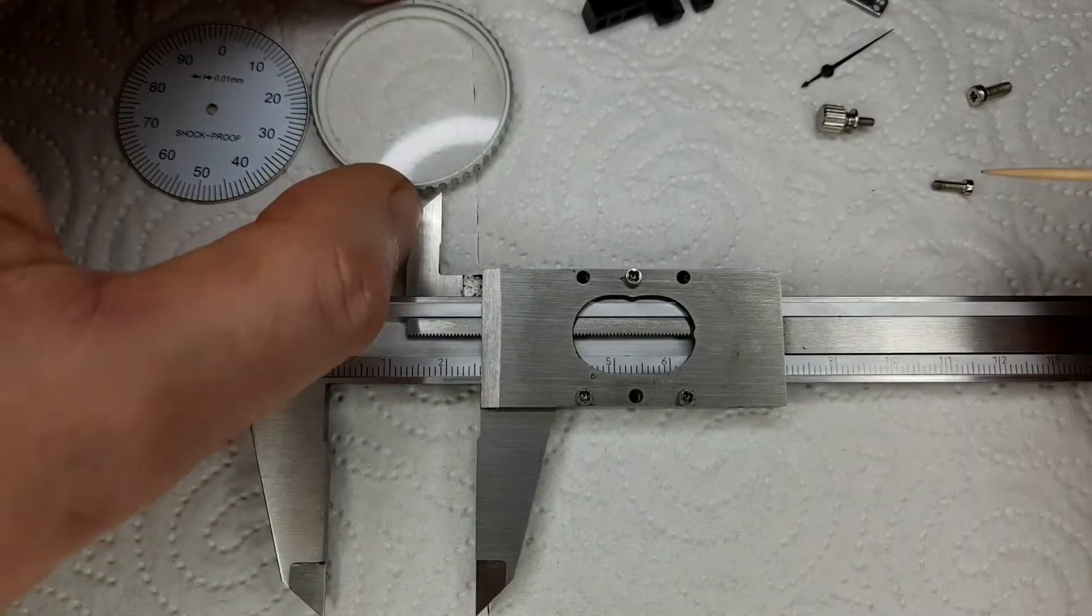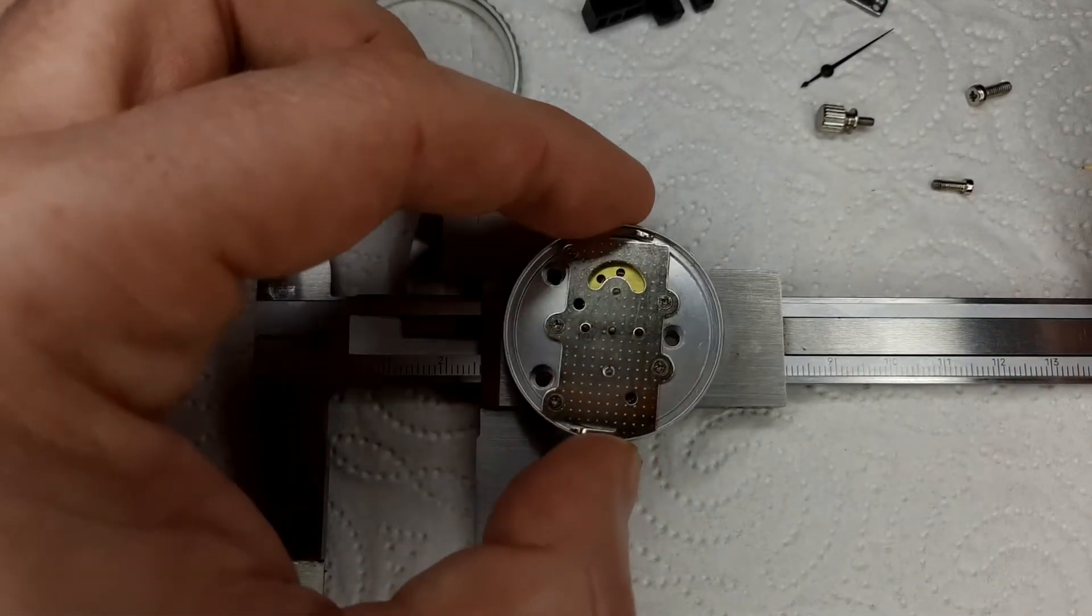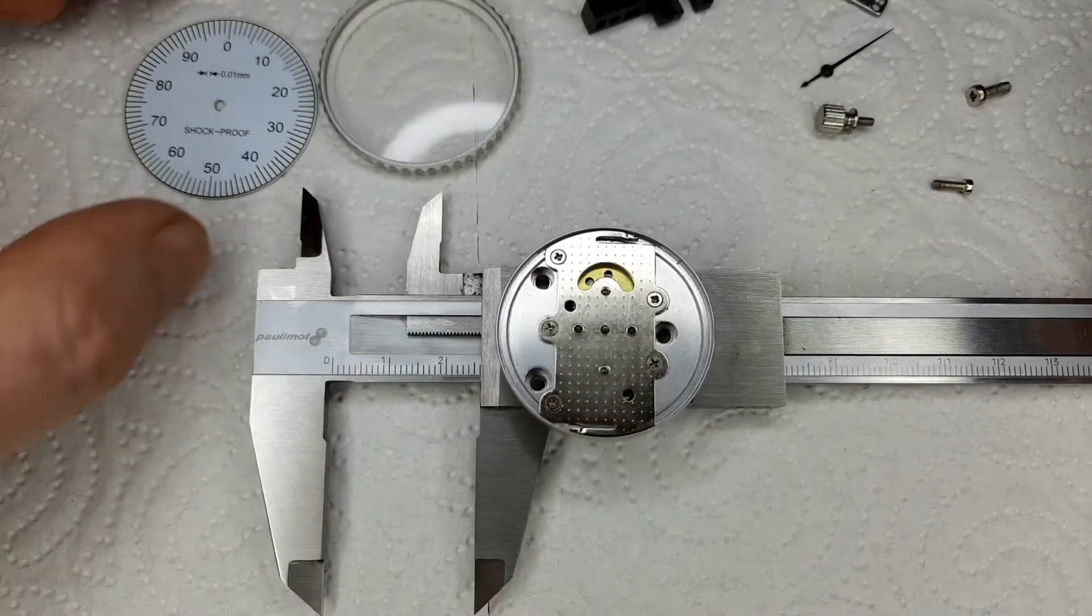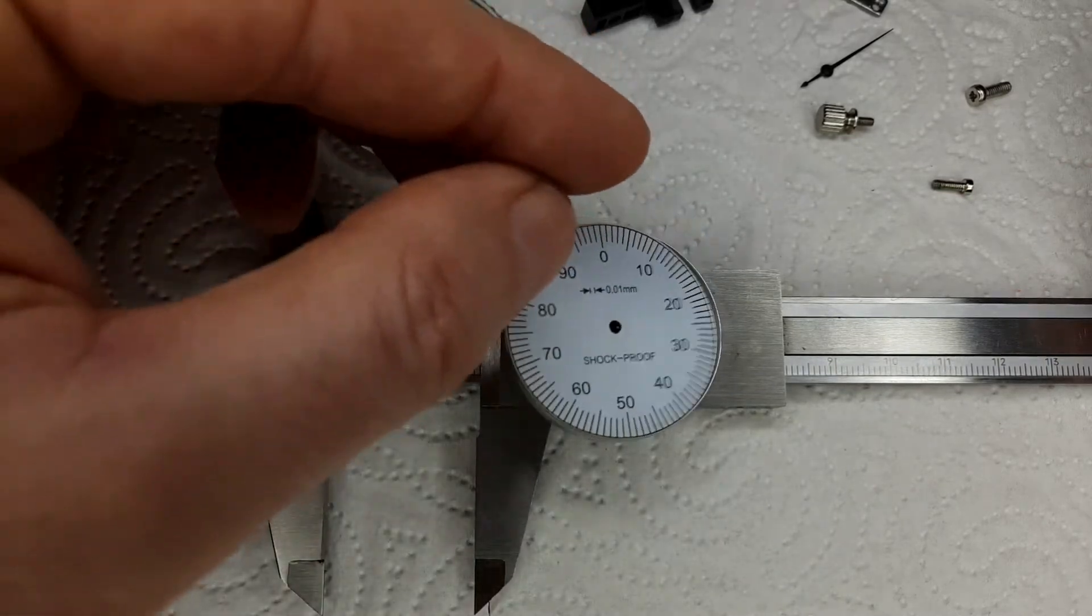The pointer is pressed on a little shaft. That shaft is driven by tiny gears and those gears engage in the gear rack.